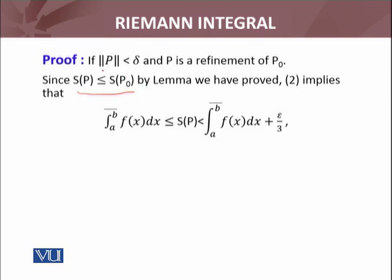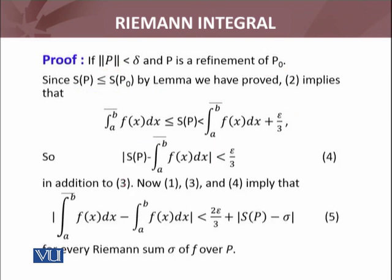P is a refinement of P₀, so this is true by the lemma we have proved. The inequality (2) implies that |S(P) - ∫ₐᵇ f(x)dx| < ε/3.